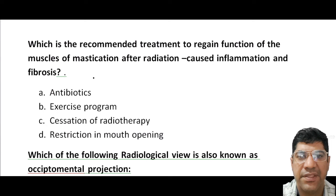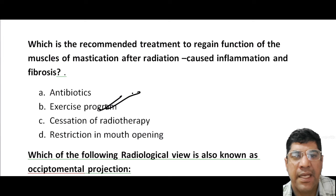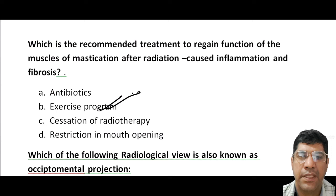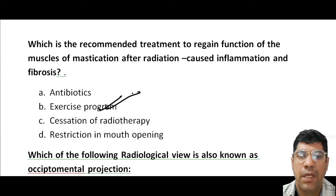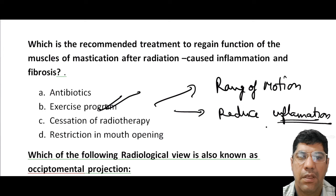What is the recommended treatment to regain function of the muscles of mastication after radiation? The answer is an exercise program. Radiation therapy can lead to inflammation and fibrosis in the head and neck region affecting the muscles of mastication, causing limitation in mouth opening and muscle function. Exercise programs and physical therapy are recommended to improve muscle function, reduce inflammation, and enhance the range of motion.